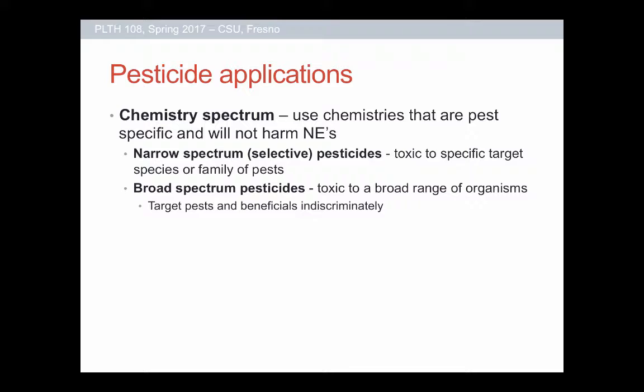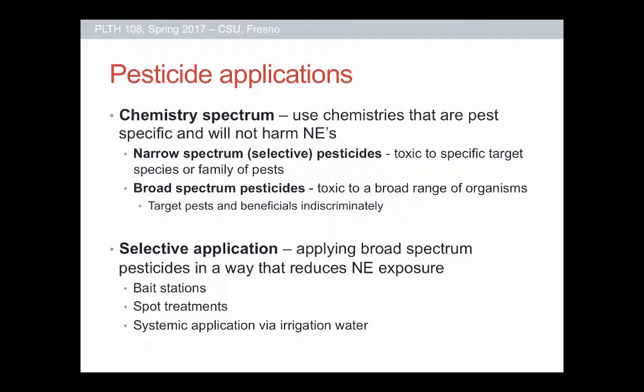In the case of insects and many fungi, you tend to have distinct families with lots of pests, whereas beneficials tend to fall under other families. So often, just having a pesticide narrowed down to a family provides enough selectivity that you'll kill the pests — maybe you'll kill some related non-pests — but you're not going to kill a lot of your beneficials. On the flip side, broad-spectrum pesticides are designed to be toxic to a broad range of organisms, killing not just your target pests but also the beneficials. A big movement in pesticides has been this shift away from broad-spectrum toward more selective ones.